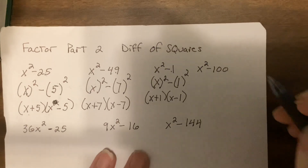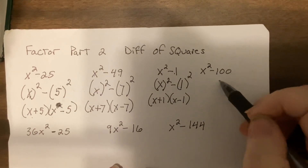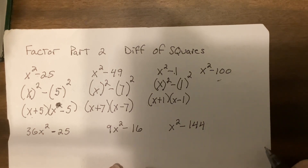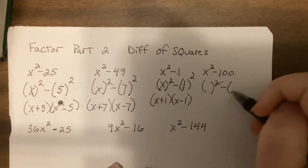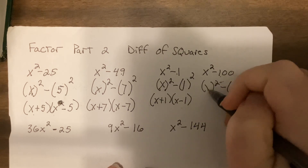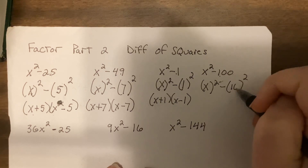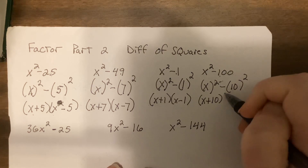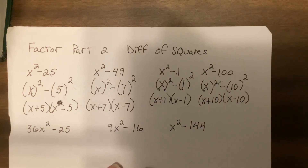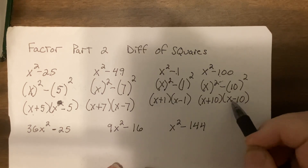I'm going to let you try this one — just one, don't panic. Try this one by yourself right now and then turn me back on. Do I have a square minus a square? What do you square to get x squared? X. What do you square to get 100? Ten. So: (x + 10)(x − 10). You can put the plus here and minus here, or the minus here and plus here — it doesn't matter.